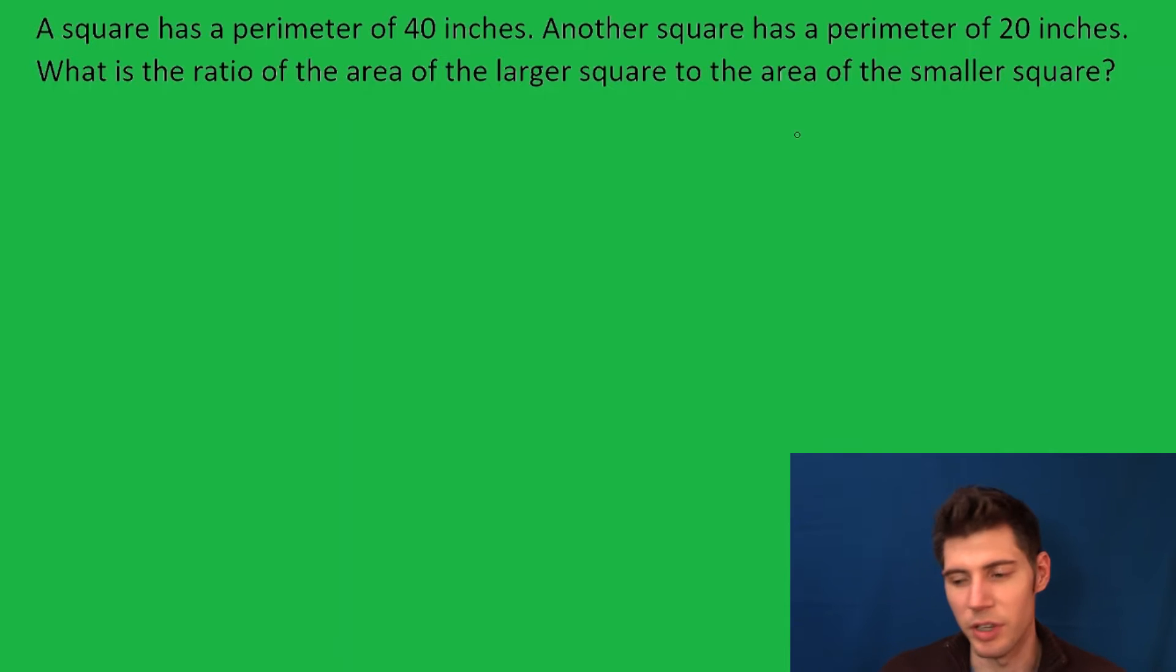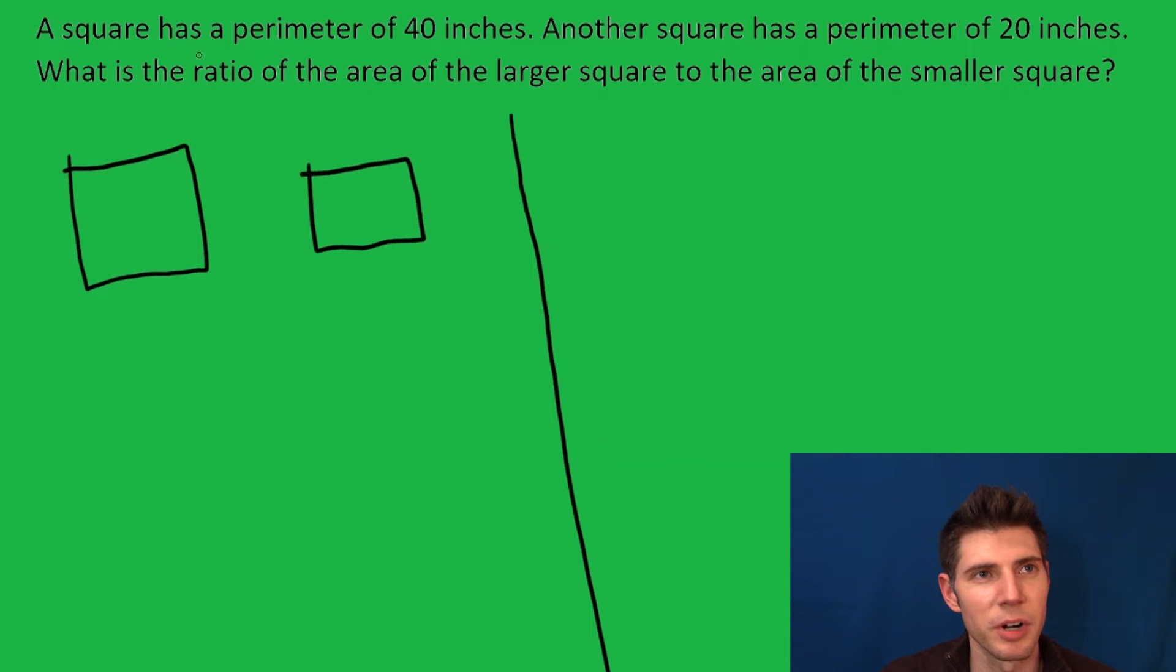There are two ways we can do this. I'm going to show you both ways. The first way, let's draw our two squares. If the perimeter is 40 inches, that means each side is going to be 10 inches: 10, 20, 30, 40.